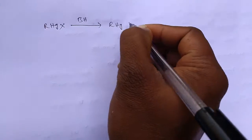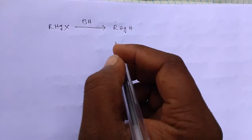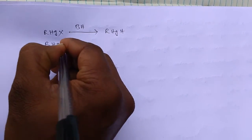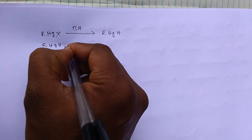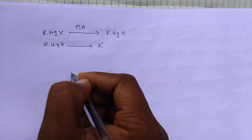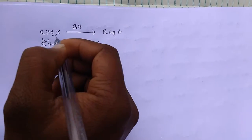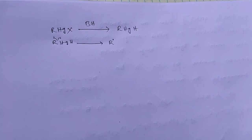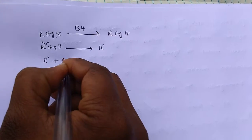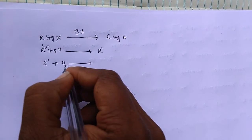Okay, for that, alkyl mercuric halides when reacts with borohydride or simply sodium borohydride, reduction takes place, then further this produces alkyl radical.